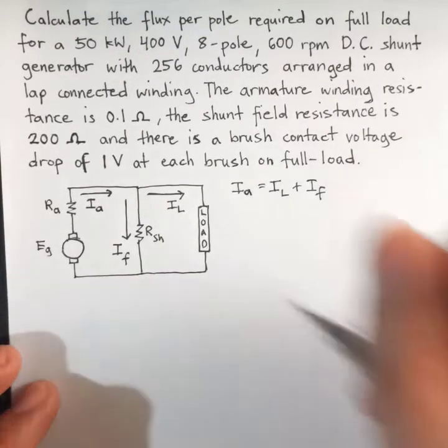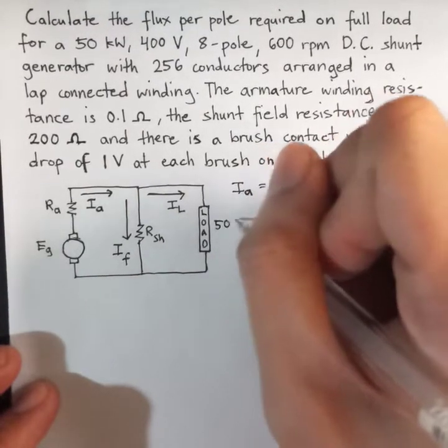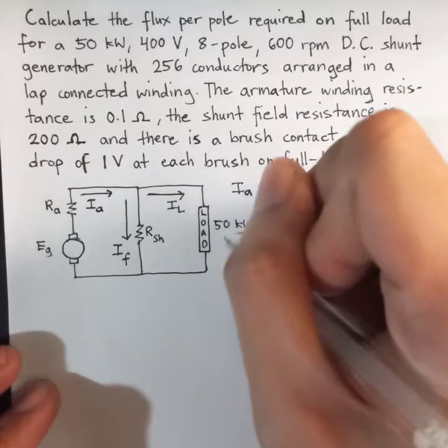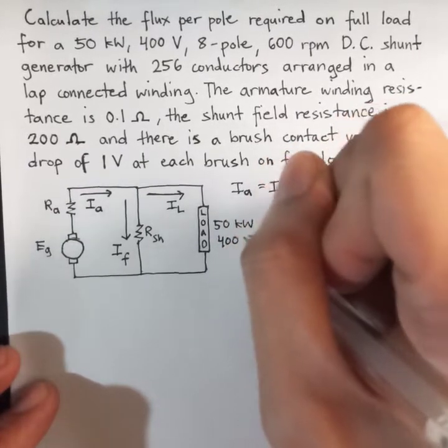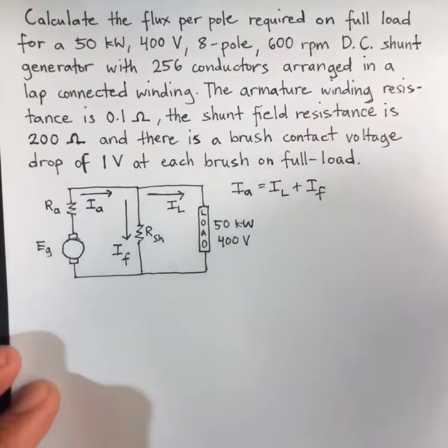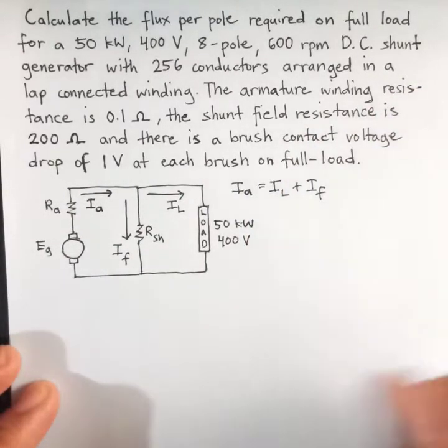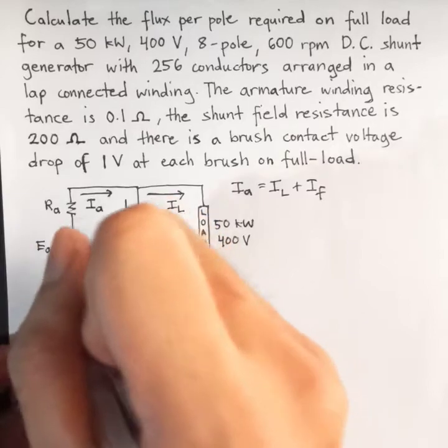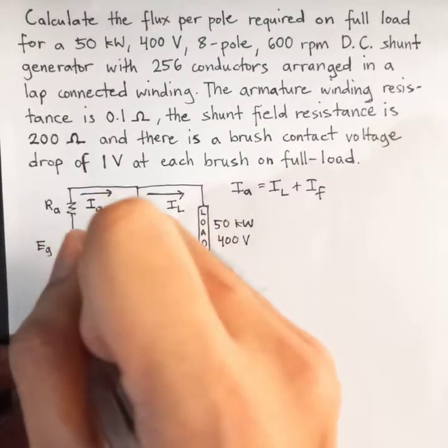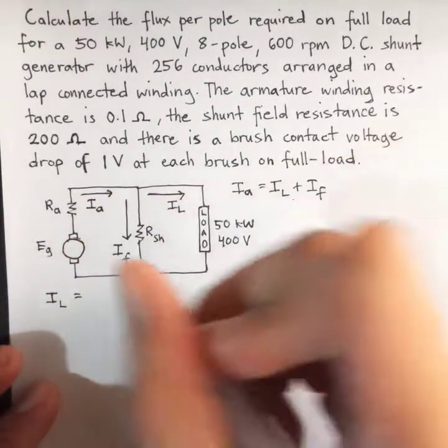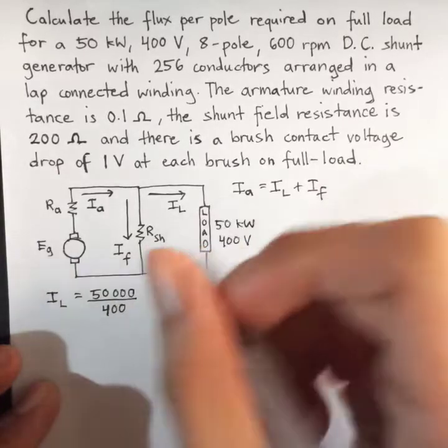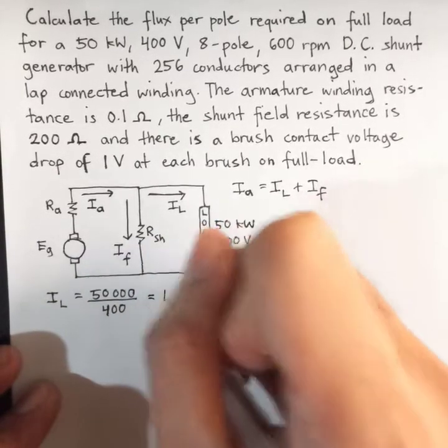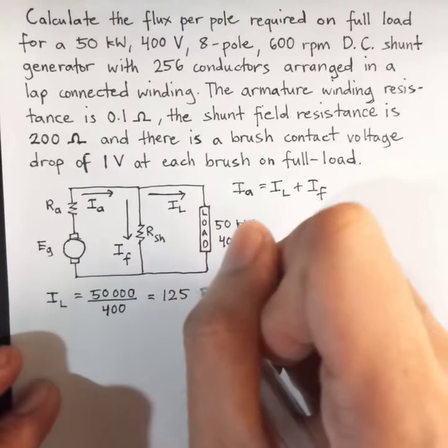Since the load is given, which is 50 kW, 400 V, we can solve for the IL, which is the load current. So, IL equals 50,000 over 400, which equals 125 amperes.